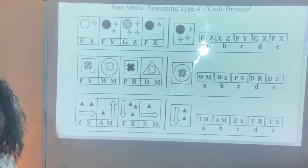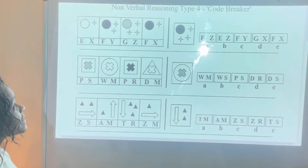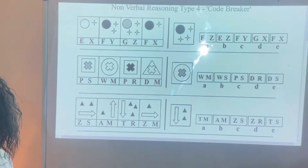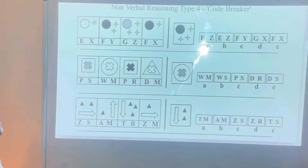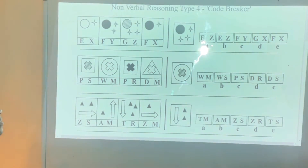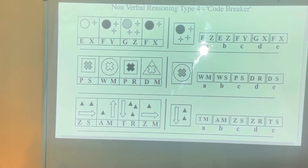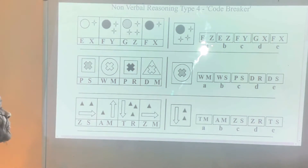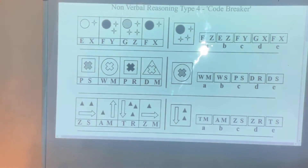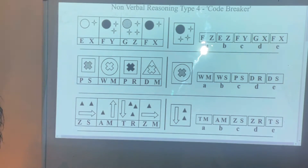Our lesson today is a non-verbal reasoning lesson. It's Type 4 and it's a code breaker. As you can see, I've got some shapes and some codes. There is a relationship between those codes and the shapes. I need to find the relationship first before I can try to find my answer.